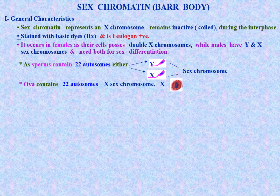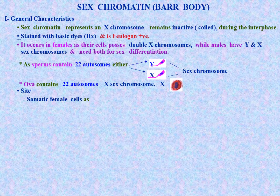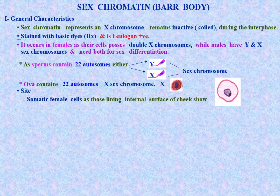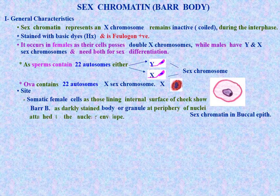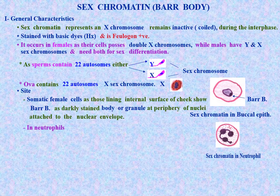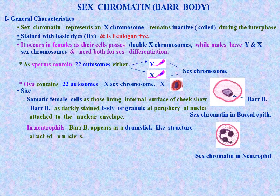Sperm cells contain 22 autosomes and either a Y or X sex chromosome, while the ovum always contains 22 autosomes and an X sex chromosome. In somatic female cells, such as those lining the internal surface of the cheek, the Barr body appears as a darkly stained body or granule at the periphery of the nucleus, attached to the nuclear envelope.